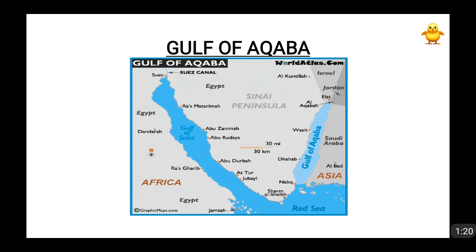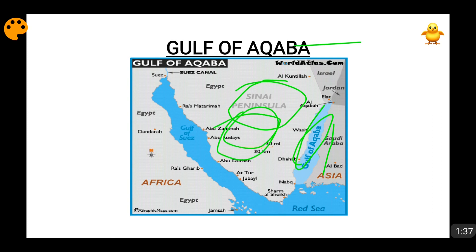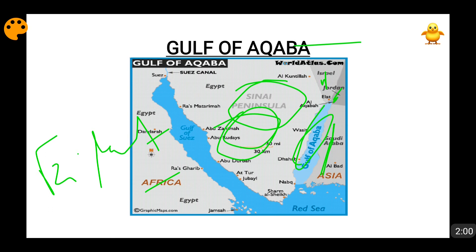Next is the Gulf of Aqaba. You can see the Sinai Peninsula — the Gulf of Aqaba is between the Sinai Peninsula and the Saudi area. This gulf is bordered by four countries: Egypt, Israel at the top, then Jordan, and Saudi Arabia below. It is a very important site for diving. It is also known as the Gulf of Eilat (E-I-L-A-T). It is located at the northern tip of the Red Sea — the northeastern tip becomes the Gulf of Aqaba and the northwestern tip becomes the Gulf of Suez. The Gulf of Aqaba separates the Sinai Peninsula from the Arabian mainland.